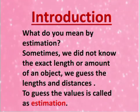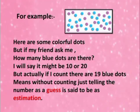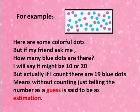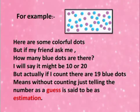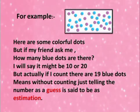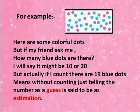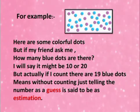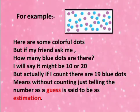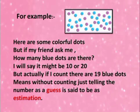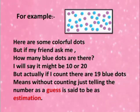What is meant by estimation? To guess the values is called estimation. For example, see here in the picture — there are some colourful dots. If my friend asks me how many blue dots are there, I will say it might be 10 or 20, but actually if I count, there are 19 blue dots. Without counting, just telling the number as a guess is said to be estimation.